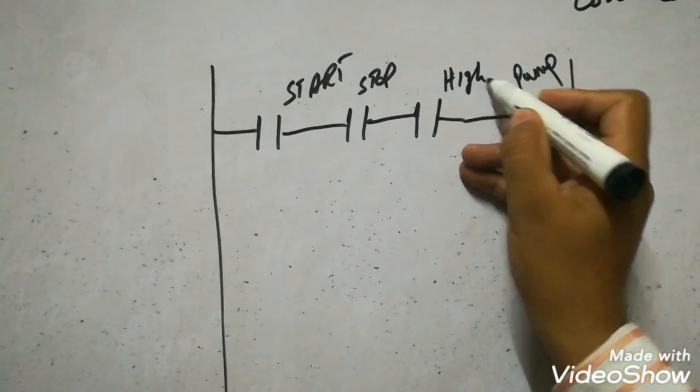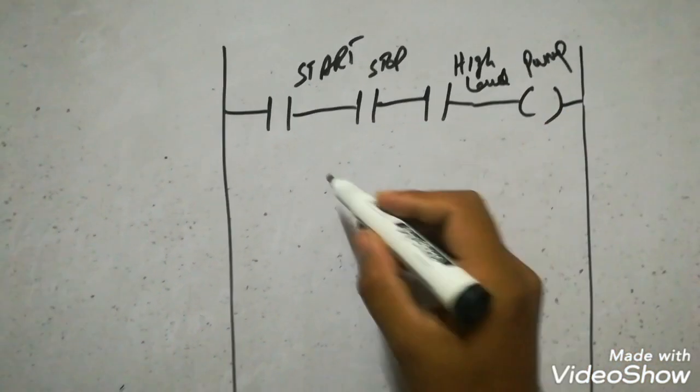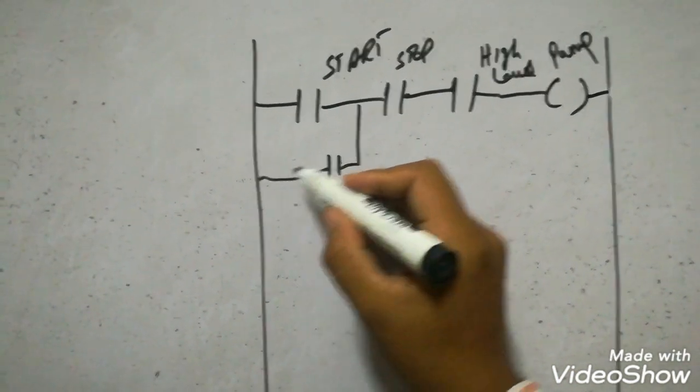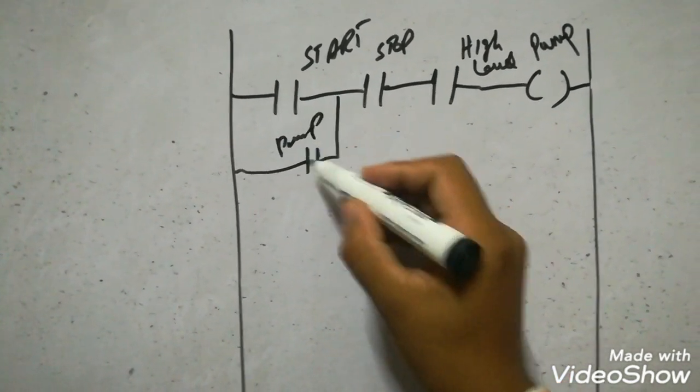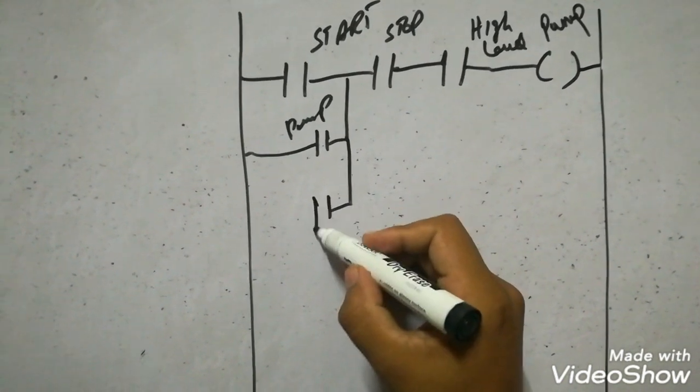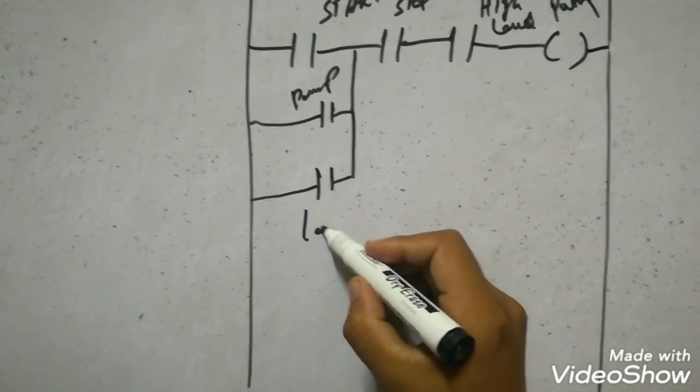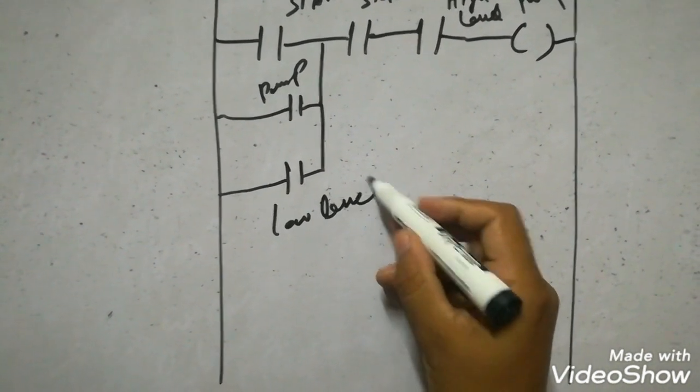This is high level switch and this is the auxiliary contact for pump. And here we will give the input of low level switch.